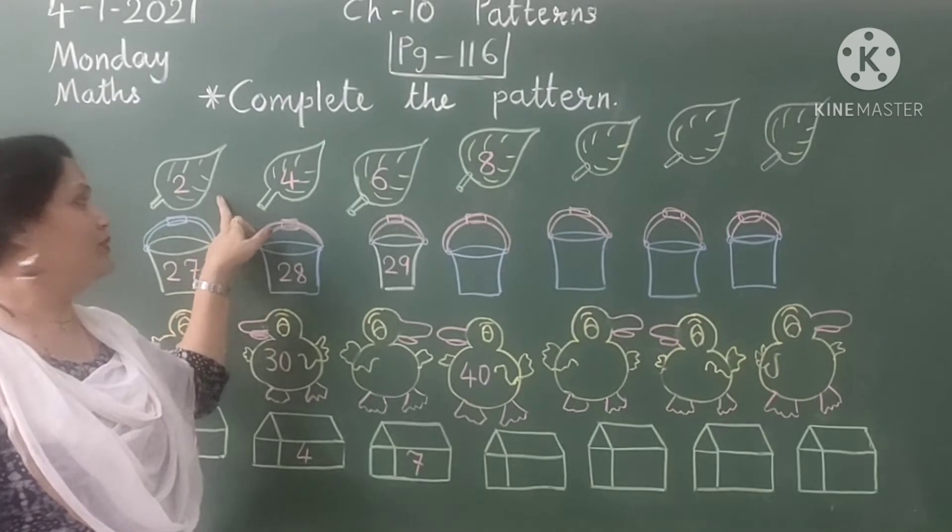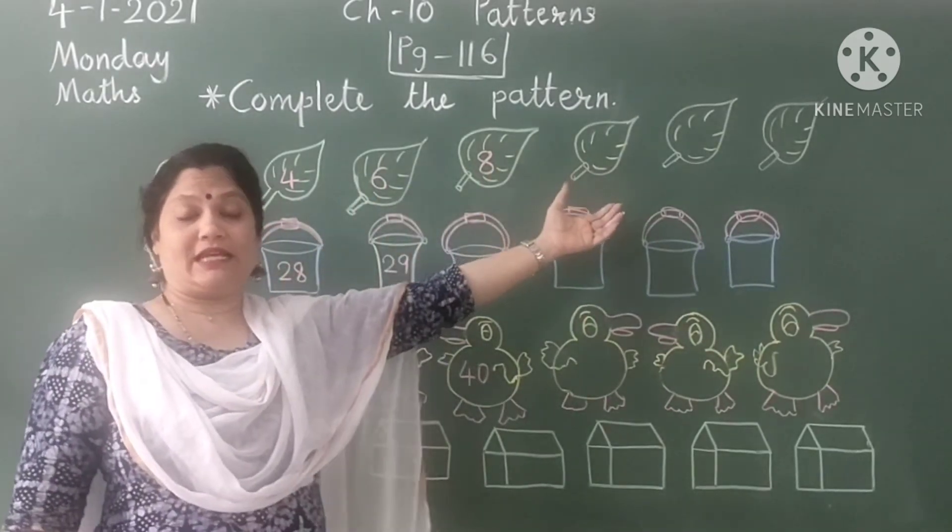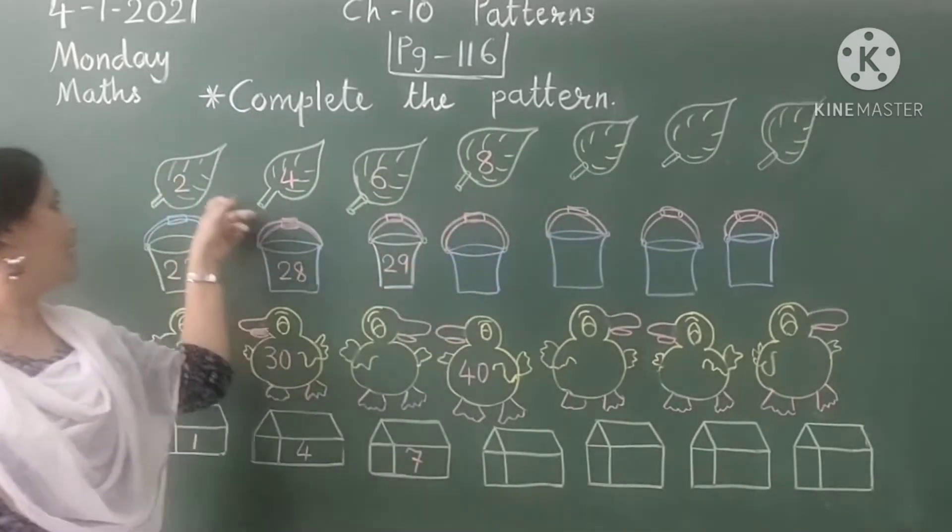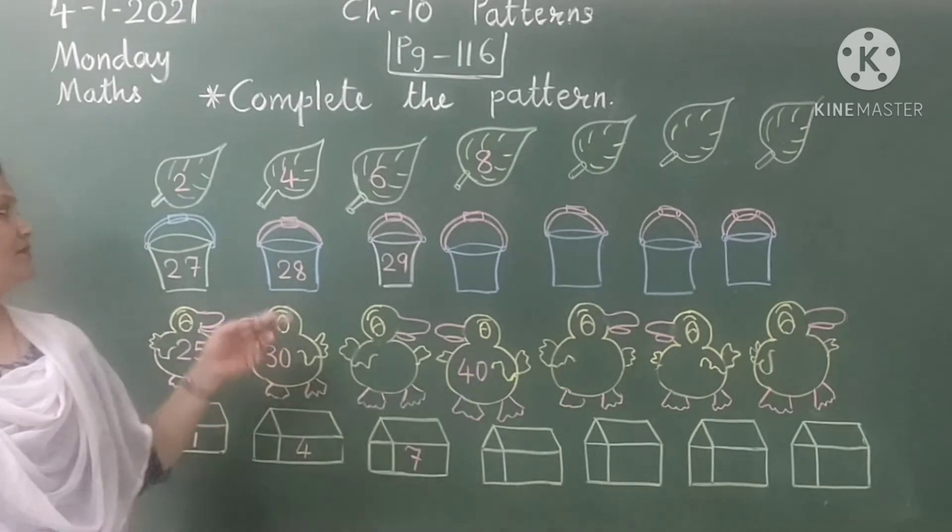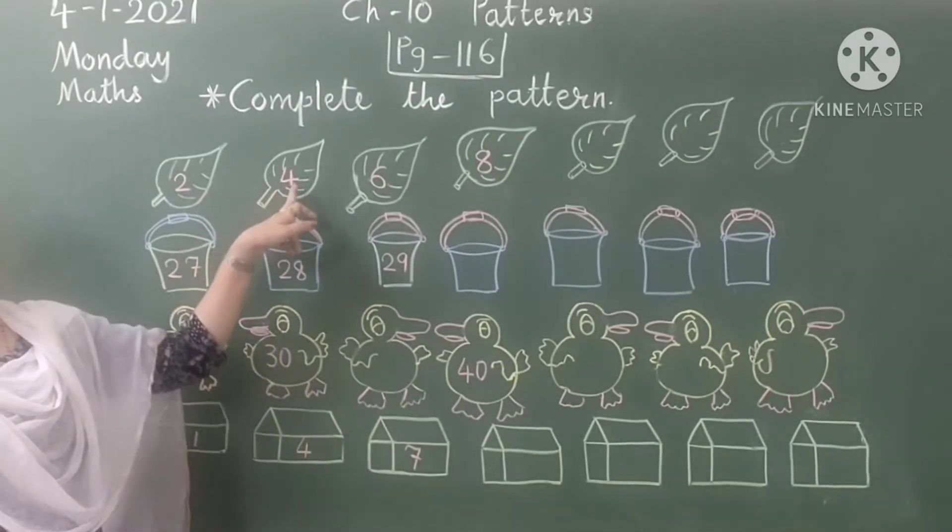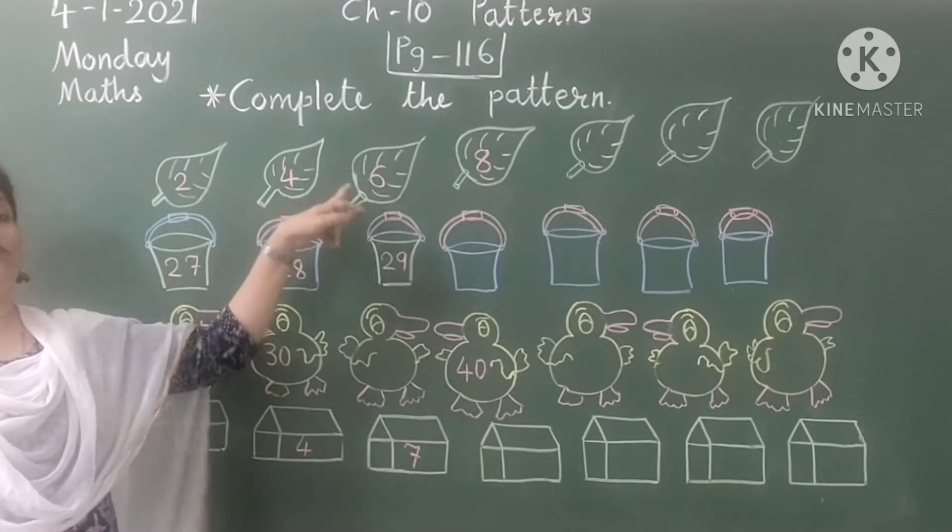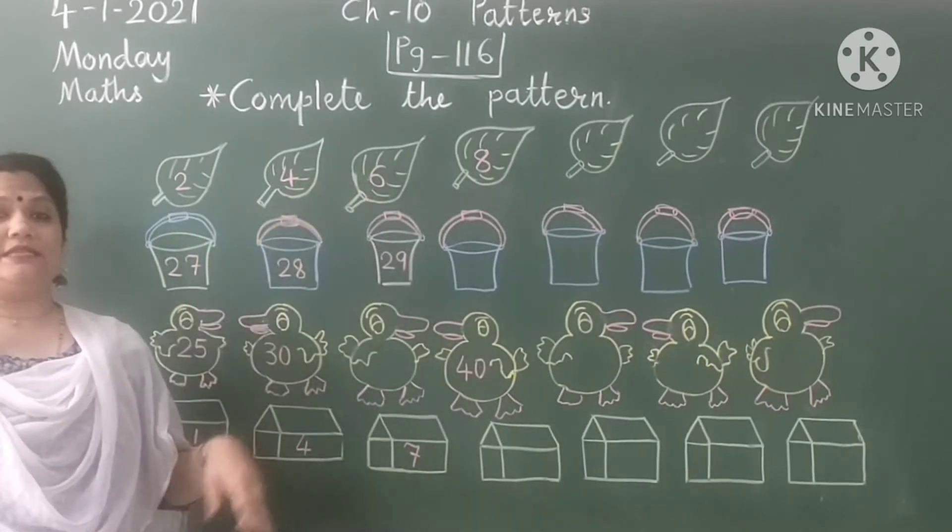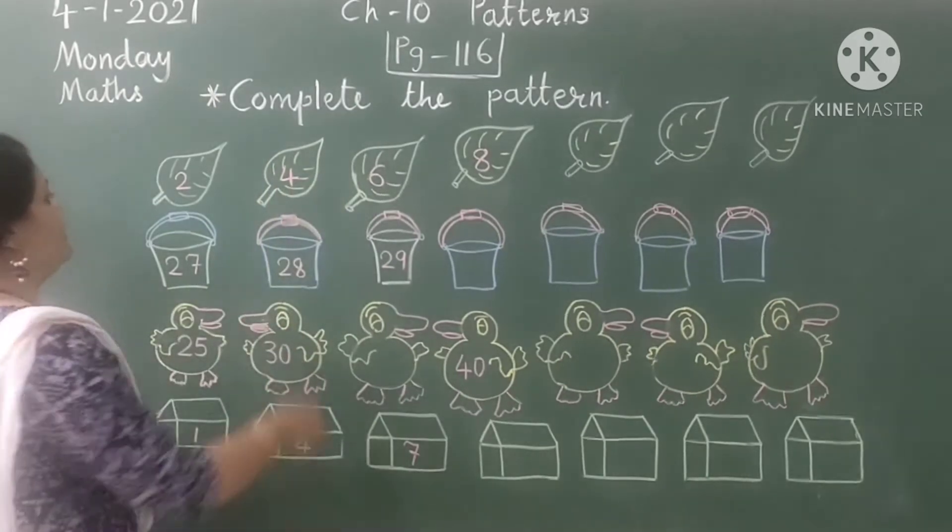Let's see here, 2, 4, 6, 8. Leaves are given and in leaves, 2, 4, 6 and 8 numbers are given. We have to check the pattern. See after 2, 3 and 4, so 2 numbers we have to add. After 4, 6. After 4, 5 and 6. So 2 numbers we have to add.